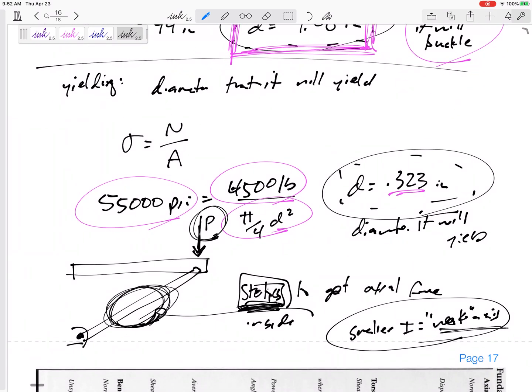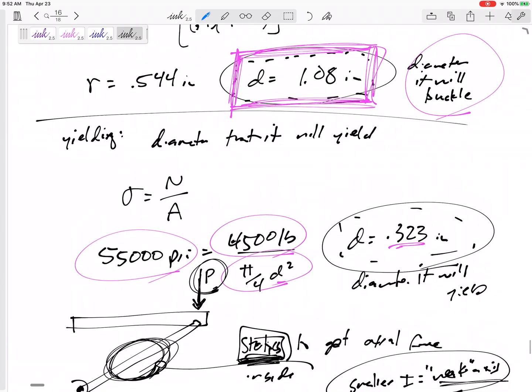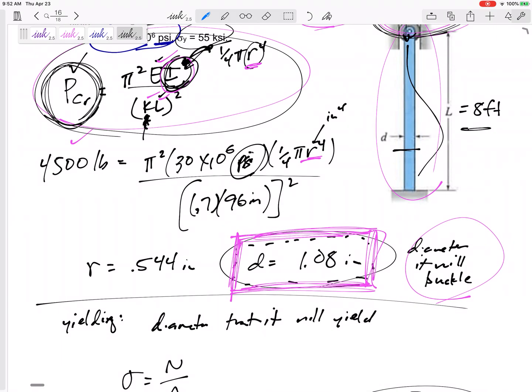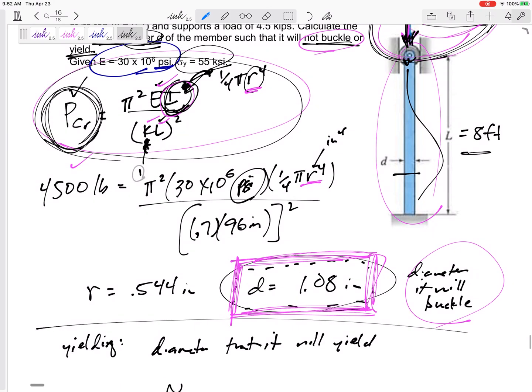And then I would look at the strong axis. Maybe the strong axis is pin-pin. So I would take the larger I of the strong axis. And if it's pin-pin, then this K value is one. And then I can calculate the P that it would buckle about the strong axis.